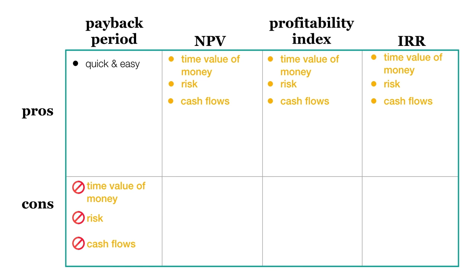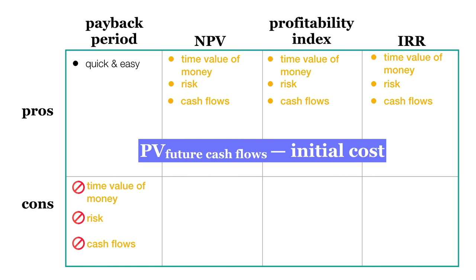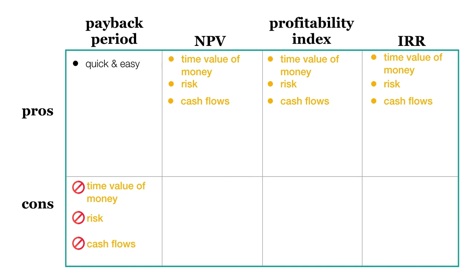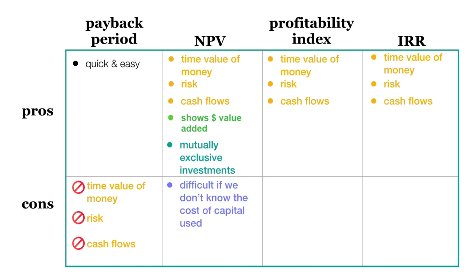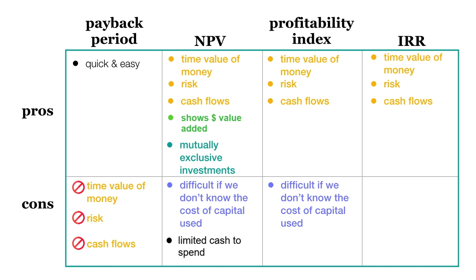NPV tells us how much value an investment will add to the company in today's dollars. We calculate NPV by present valuing our future cash flows and subtracting our initial cost. NPV is simple to interpret — any project with an NPV above zero should be accepted. It is also good for evaluating mutually exclusive investments where we want to maximize our return in absolute terms and, by extension, the expected increase in stock price. However, NPV can be difficult to apply when we don't know the cost of capital we should use. Really, the only time NPV can't help us is when we have limited funds to spend and want to know which investment maximizes our return per dollar spent — in that case, we should use the profitability index instead.